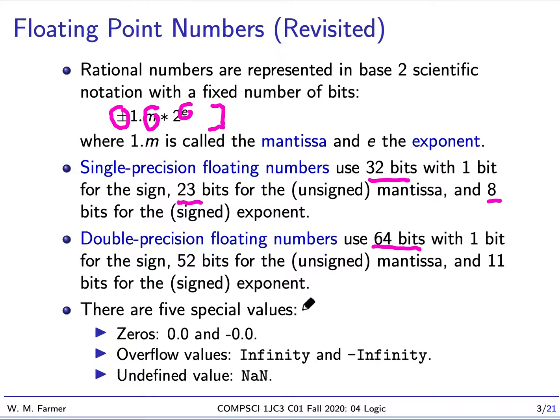Now there's also, as I mentioned last time, five special values. We're going to use positive zero, negative zero, positive infinity, negative infinity, and NaN which stands for not a number.